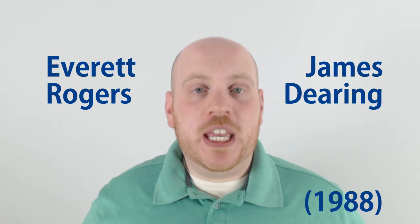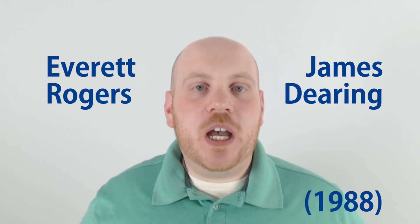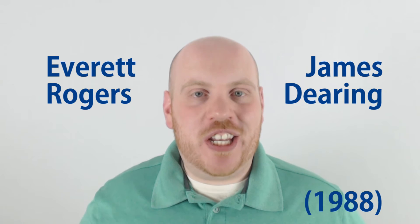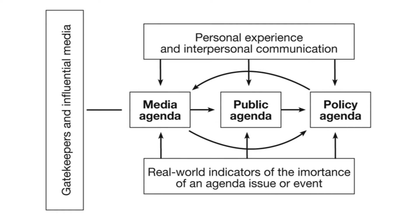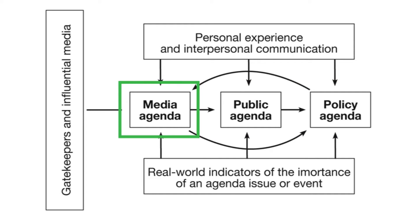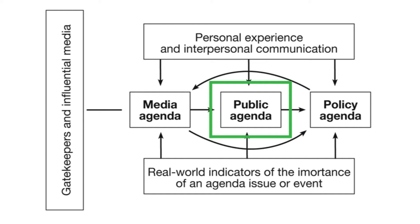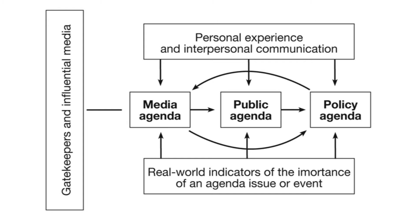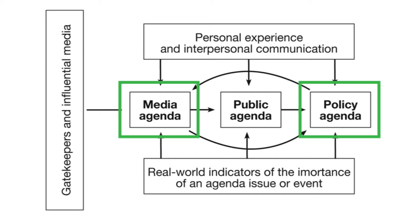Agenda-setting theory is an often-studied theory, and many other researchers have had their input on it as well. Two influential scholars, Everett Rogers and James Dearing, in 1988 developed the following model — it's become the most prevalent model to discuss agenda-setting theory. As you'll see here, there are three types of agendas involved, and they're all interrelated. The media agenda — the message the media wants to get across — can be affected by policies or even politicians. The public agenda, that is, the ideas that the public holds, are affected by the media. And in a phenomenon known as agenda-building, policies are affected both by the media and by the public agendas.